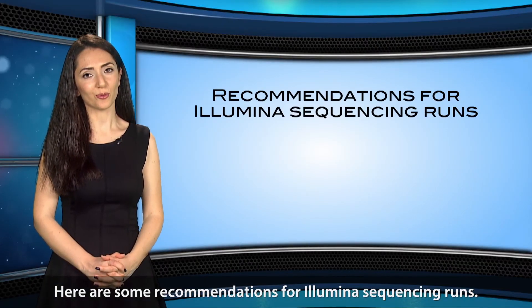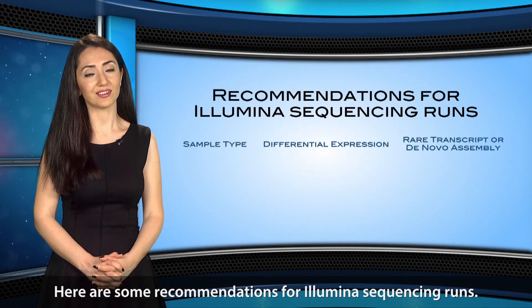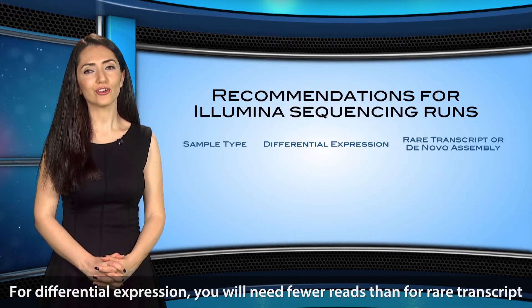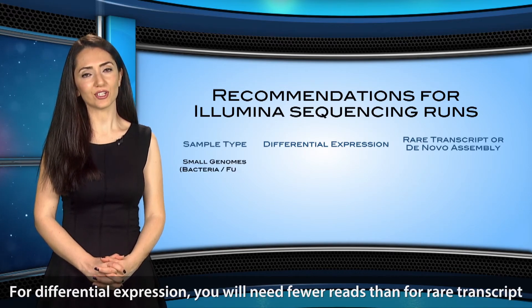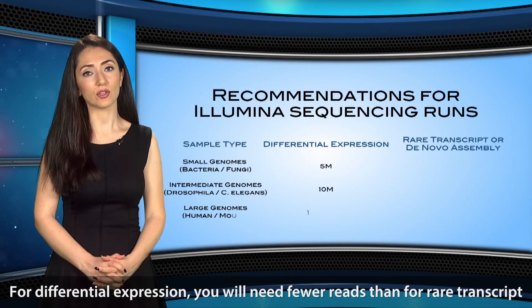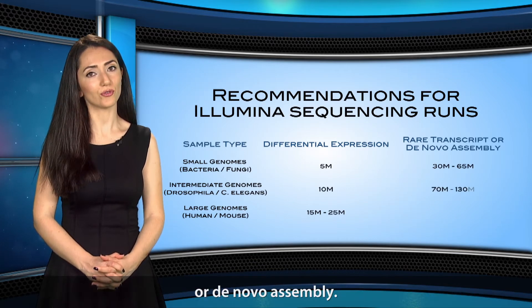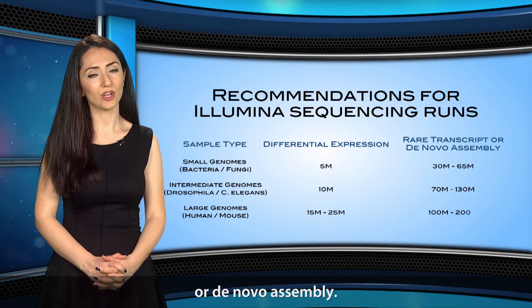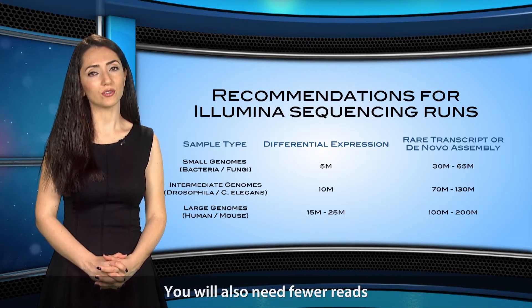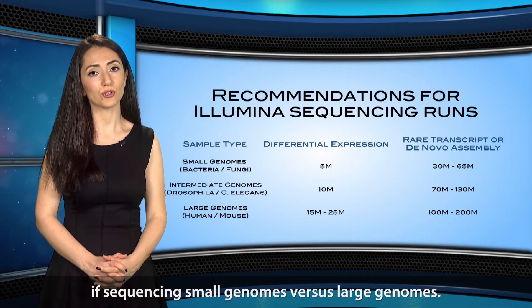Here are some recommendations for Illumina sequencing rounds. For differential expression, you will need fewer reads than for rare transcript or de novo assembly. You will also need fewer reads if sequencing small genomes versus large genomes.